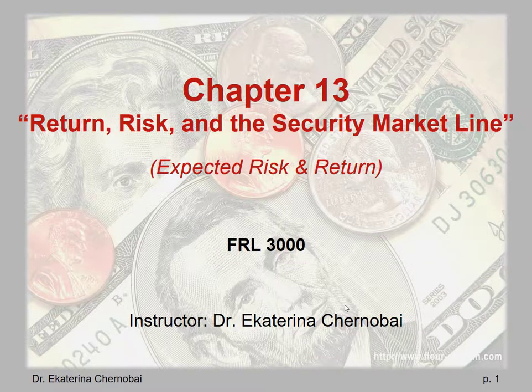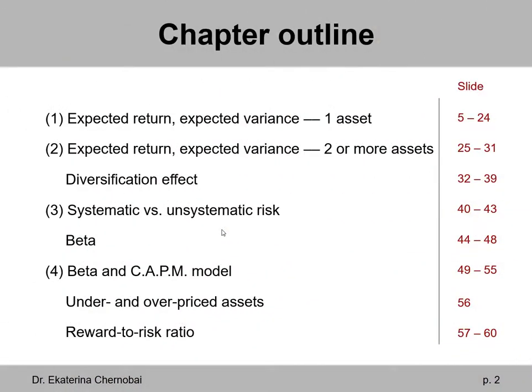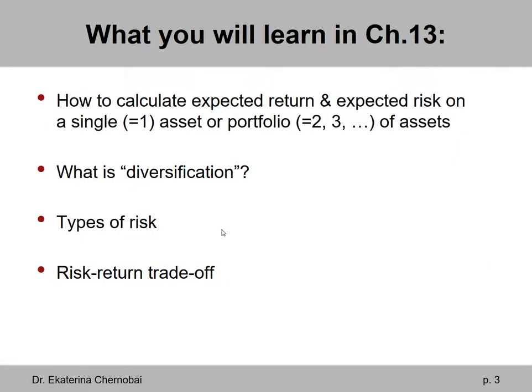Chapter 13 covers expected risk and return, also known as the security market line. The chapter first looks at the math for calculating expected return and expected risk for a single asset — for example, buying shares of stock from one company — and then extends this to a portfolio of assets, such as buying shares from two, three, or more different companies.